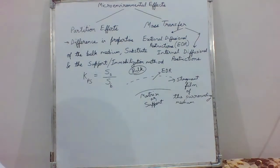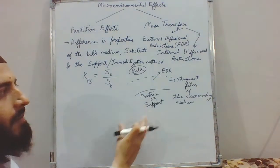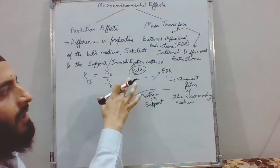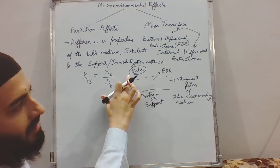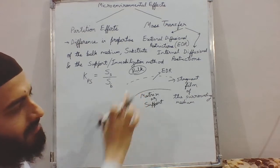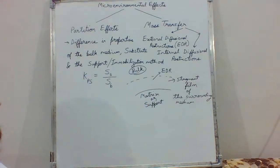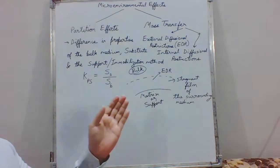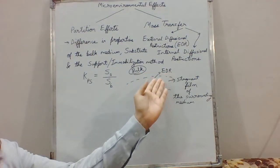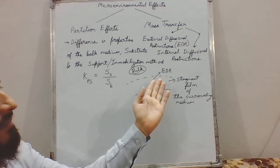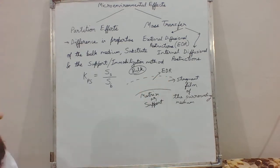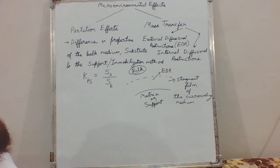If we know beforehand the nature of the matrix, we can reduce the number of experiments required to reach the optimum bulk pH for maximum enzyme activity. The external diffusion resistance increases as the thickness of the stagnant film increases. We will be seeing the quantitative relationships shortly.